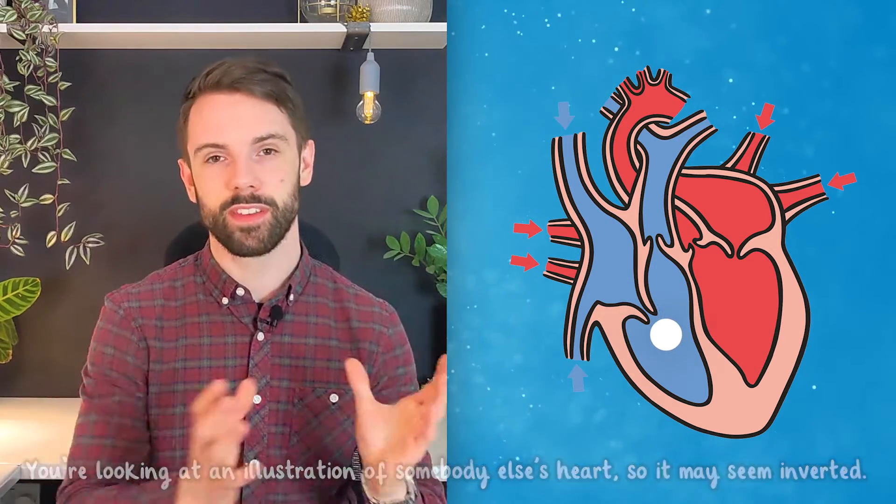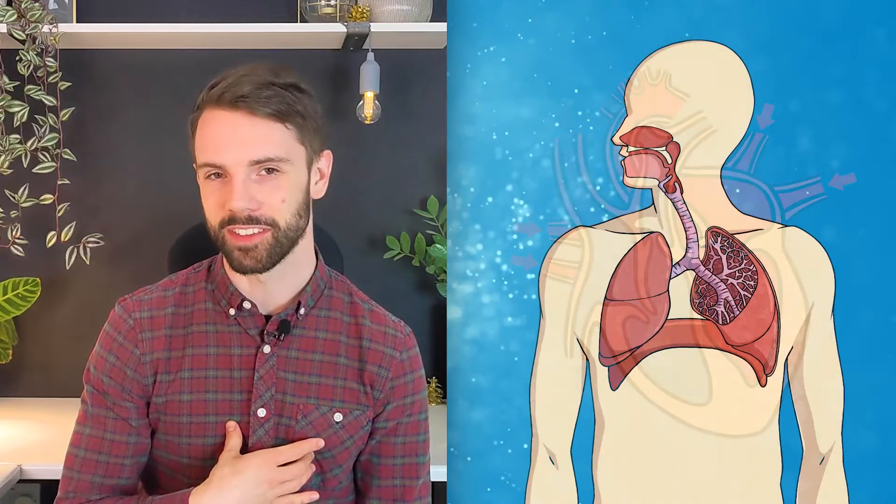The heart then squeezes the right ventricle, sending blood up to the pulmonary arteries, where it goes to get oxygen — because your body likes oxygen. Where does your body find oxygen? Your lungs. As you breathe in and out, gaseous exchange occurs, and now your blood has oxygen.